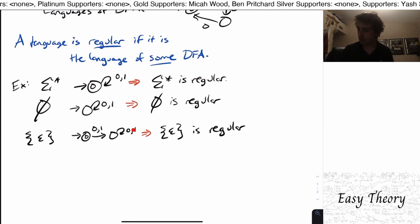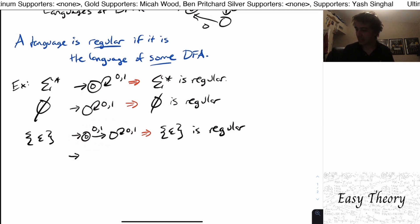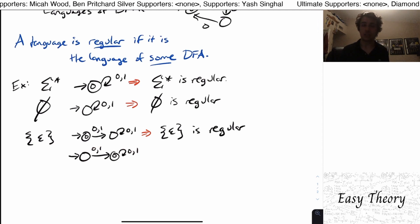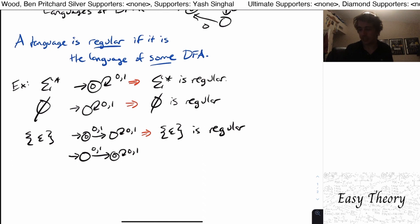But notice what we can do here. If I take exactly the same DFA, but instead I flip which states are final and not final, whatever this is, this is also a DFA. And so therefore, whatever that is, it's also regular.